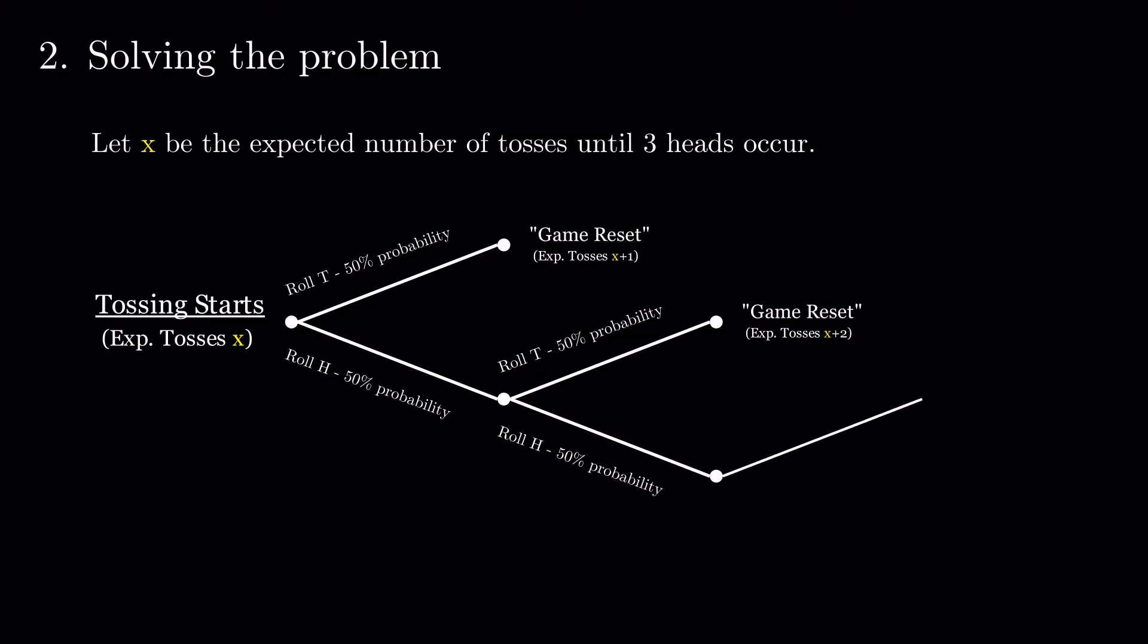The last part of our probability tree is similar. 50% chance to reset the game with an expected number of tosses of x plus 3. Or 50% chance of getting heads and getting to three consecutive heads in three tosses.